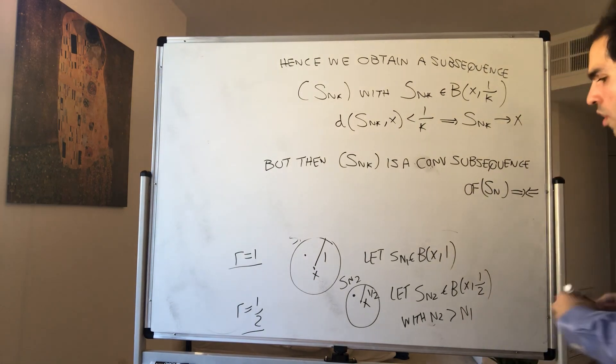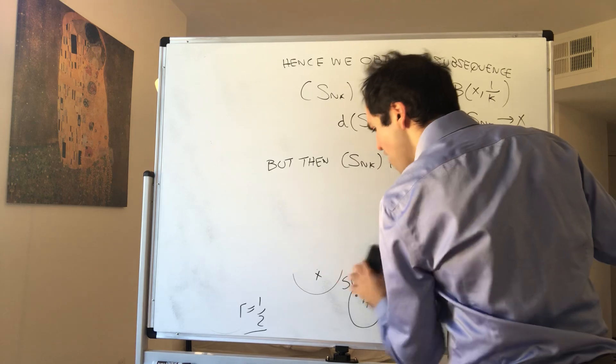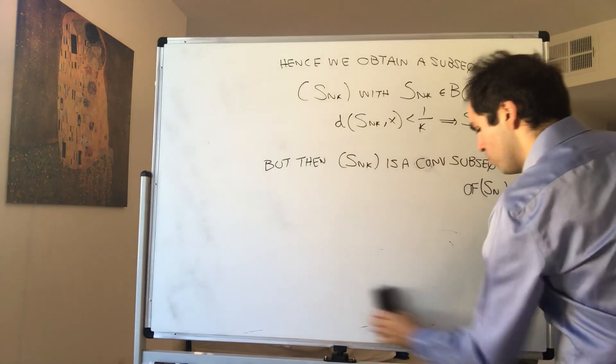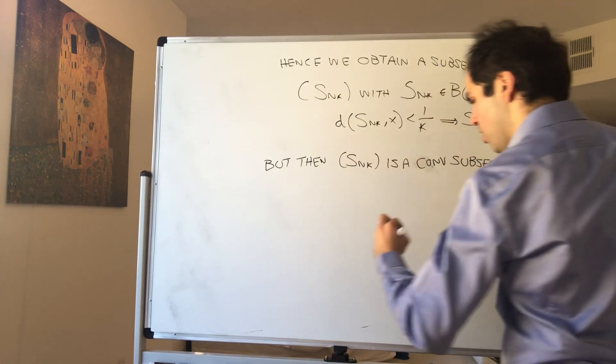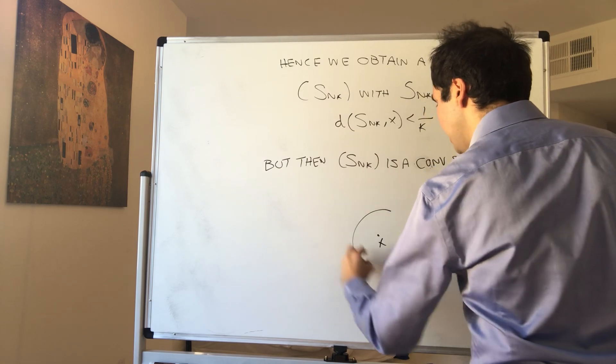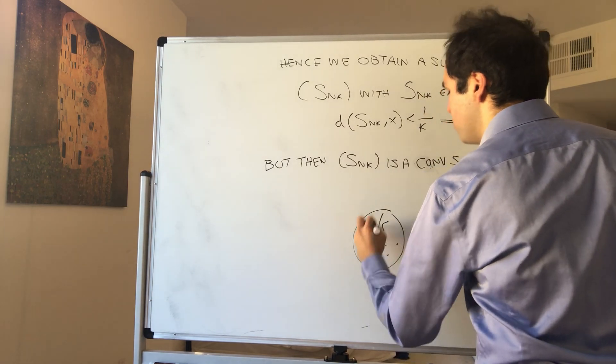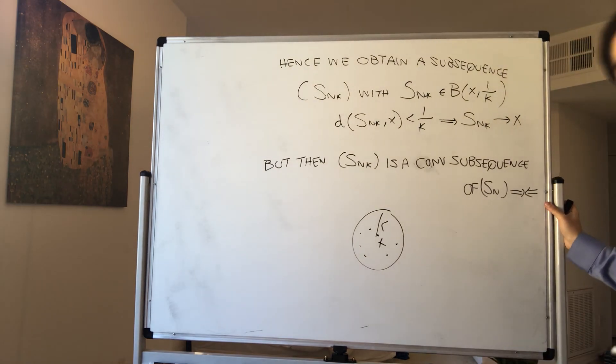And that contradicts our assumption. All right. So what do we know? We now know that for every ball, there's some radius that has only finitely many terms of your sequence.